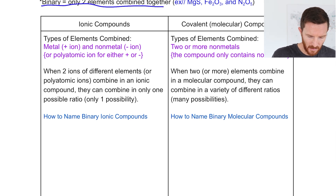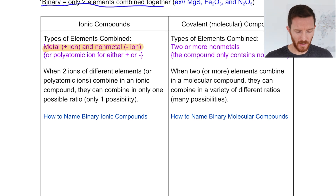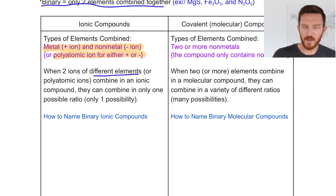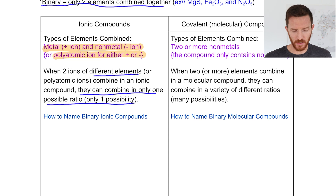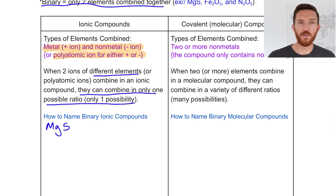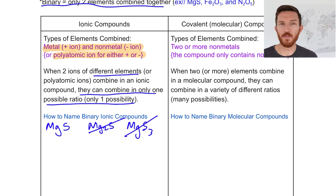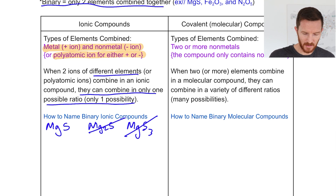Let's start with ionic compounds. Ionic compounds are combinations of positive and negative ions — a metal as a positive ion and a non-metal as a negative ion — or one of them might be a polyatomic ion. We need to identify the two ions present and find that they combine in only one possible ratio. For example, magnesium and sulfur combine only as one magnesium to one sulfur — never two magnesiums and one sulfur, or one magnesium and three sulfurs. This is based on the ion charges for each element.